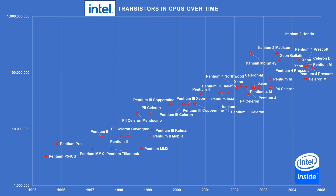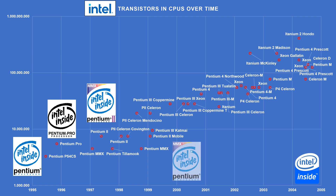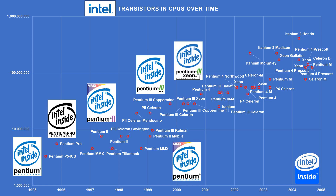Between 1995 and 2002, many iconic platforms were introduced such as the Pentium, the Pentium Pro, the Pentium 2, the Pentium MMX, the Pentium 3, the Pentium 3 Xeon, and the Pentium 4.